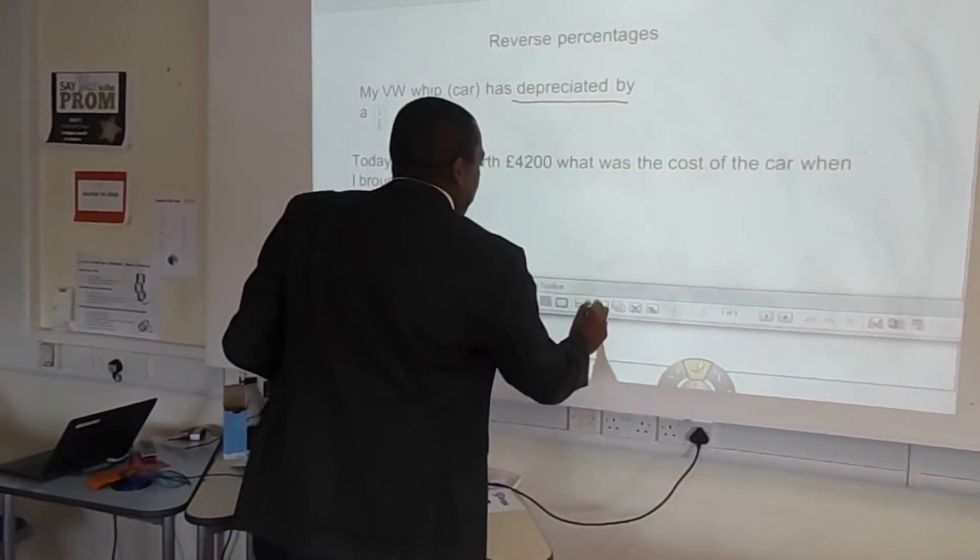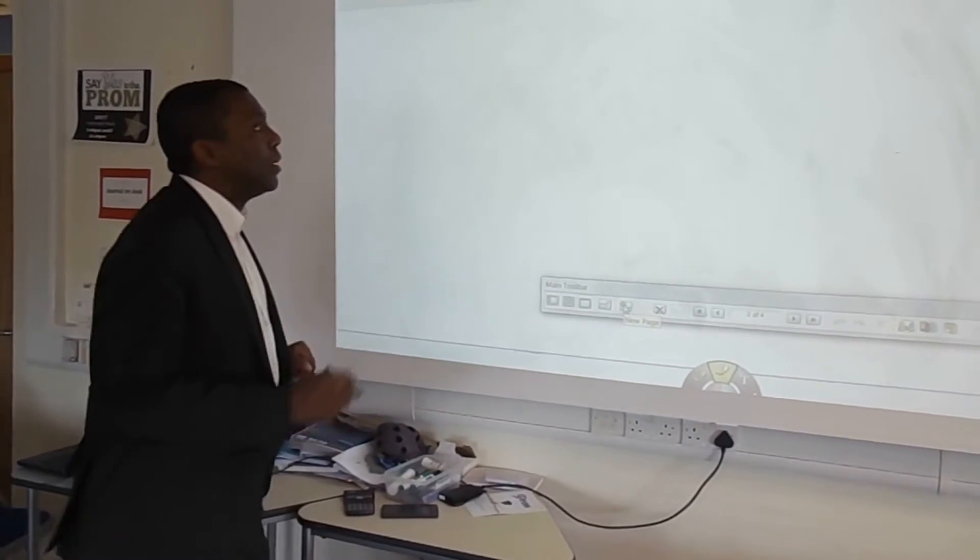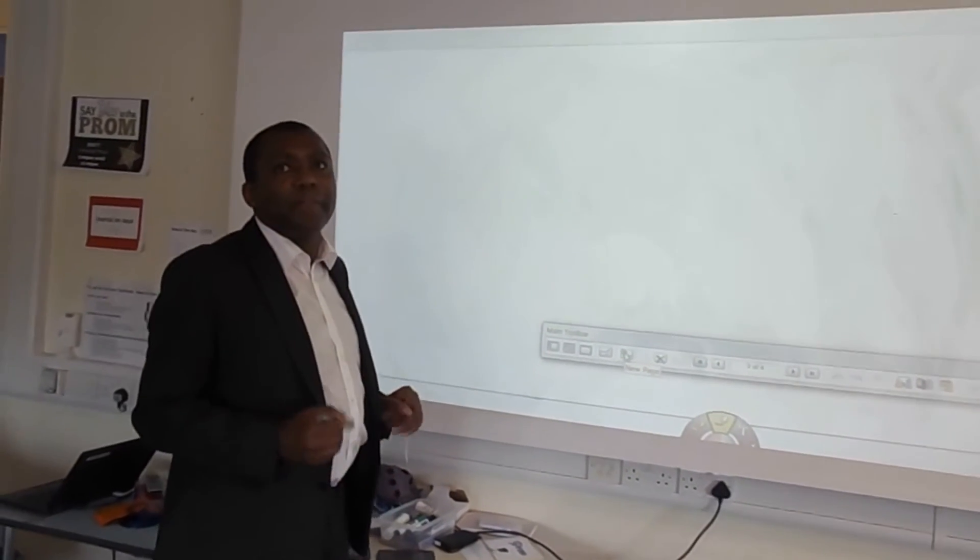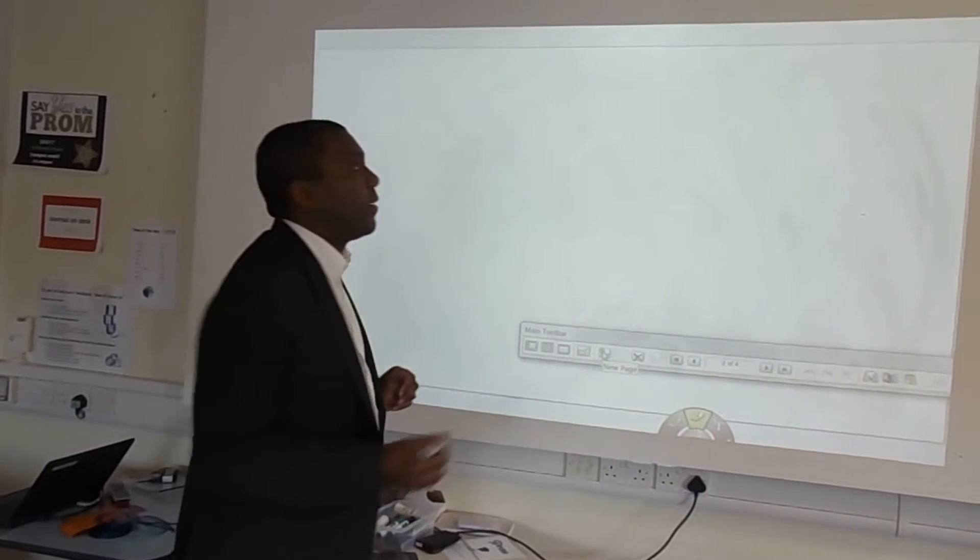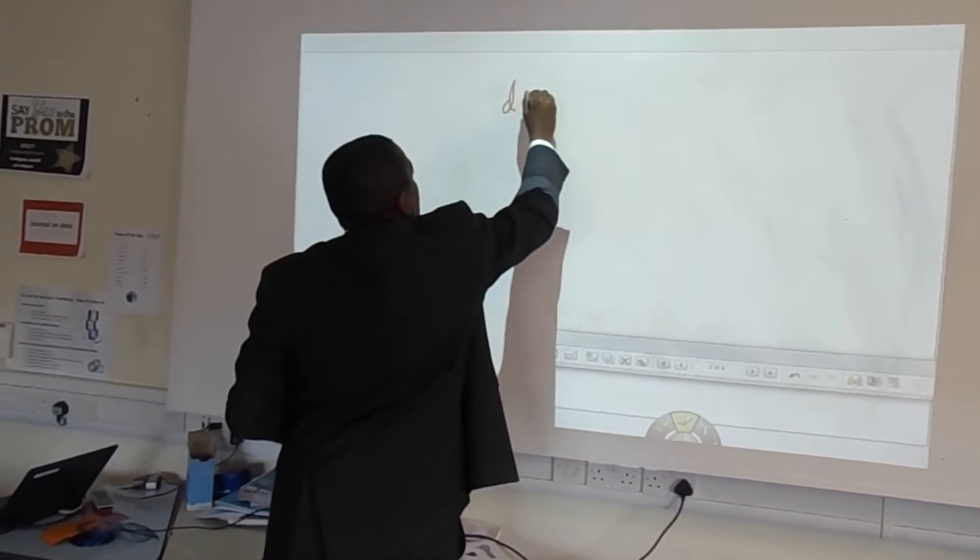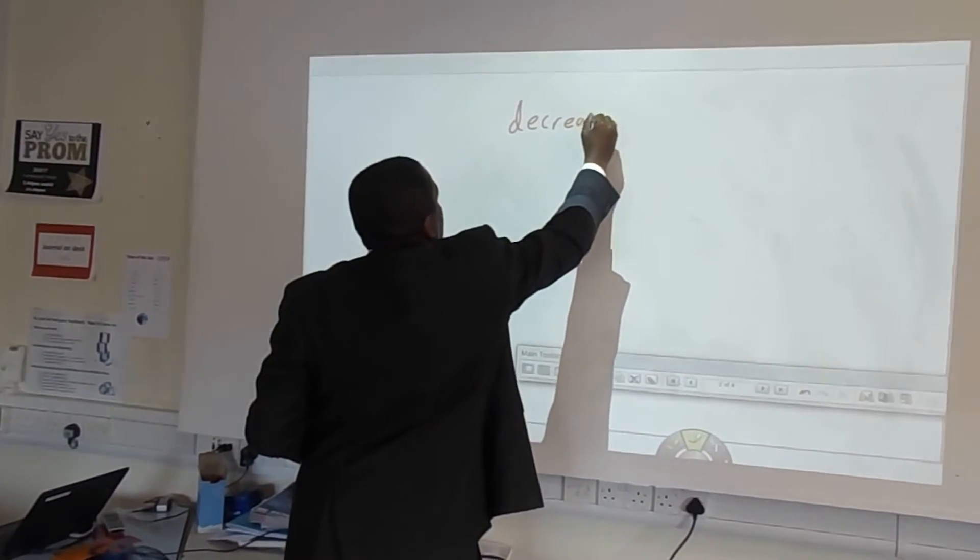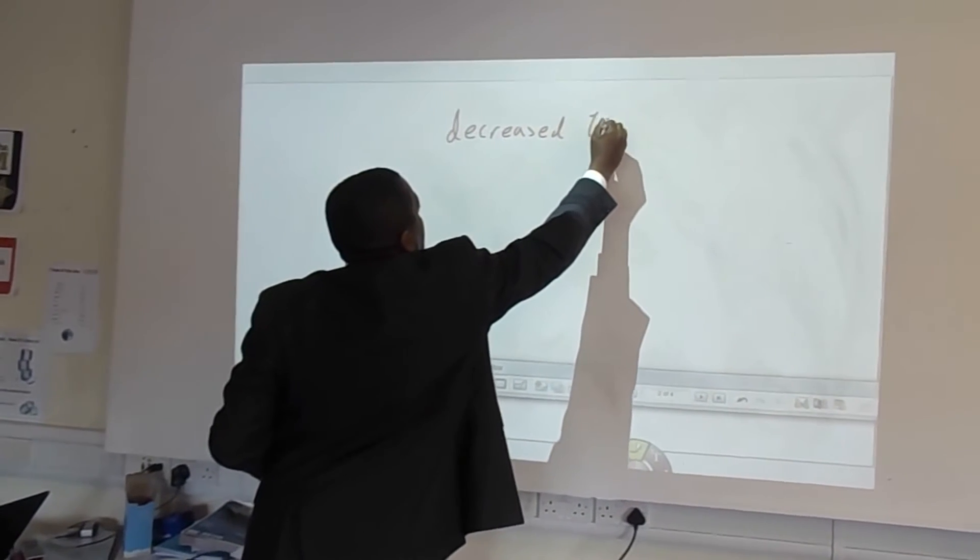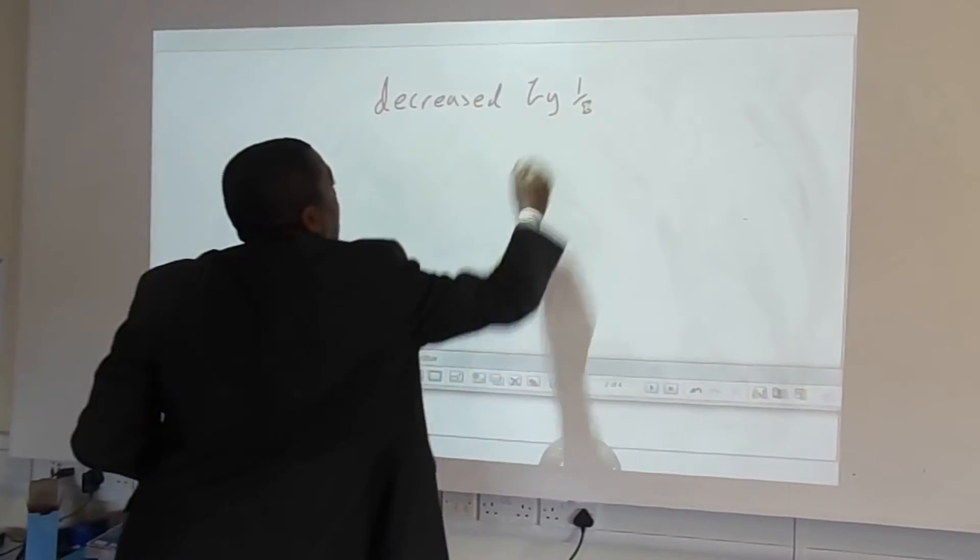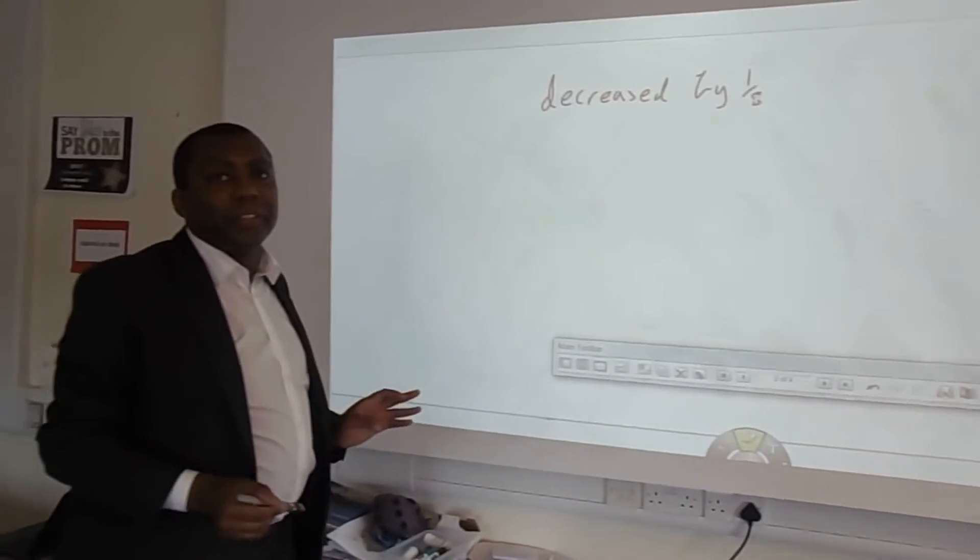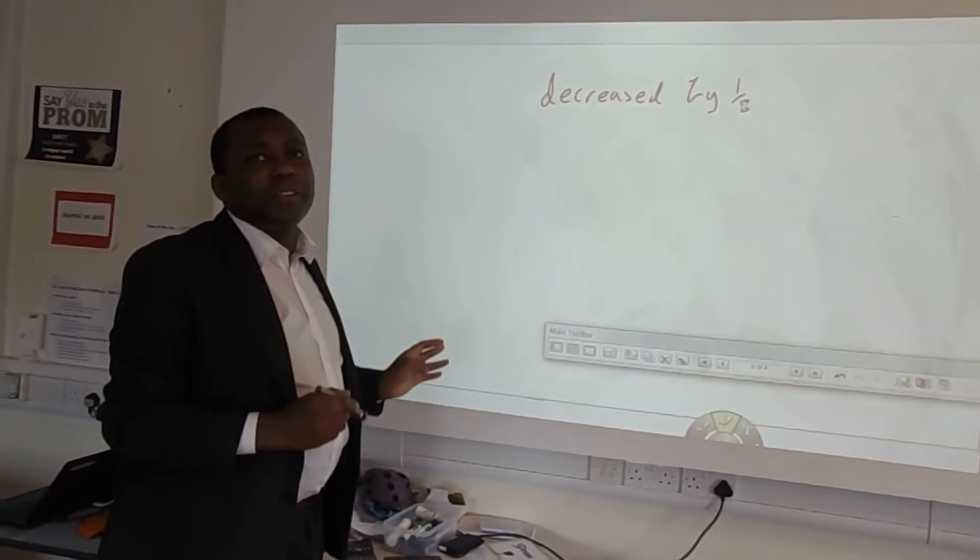So I know the car is depreciating by a fifth, which means it's decreased by a fifth. So the car is now worth 4 fifths of its original value.